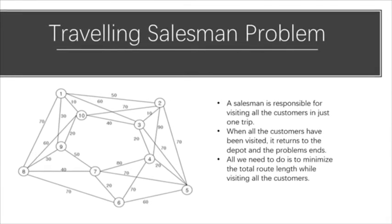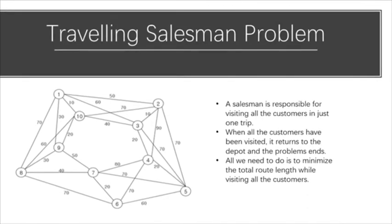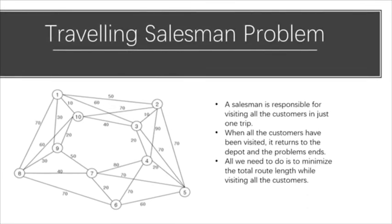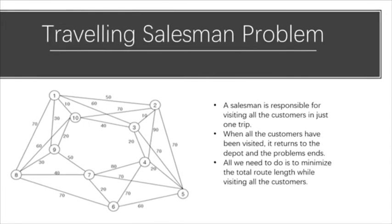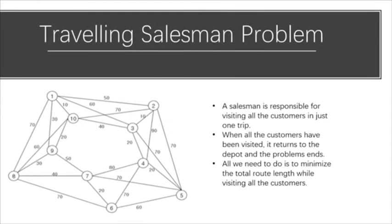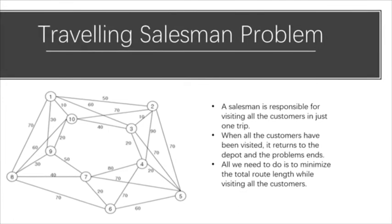Many people have studied this problem. The easiest or maybe the most expensive solution is to simply try all possibilities. The problem with this is that for n customers, you have n-1 factorial possibilities.